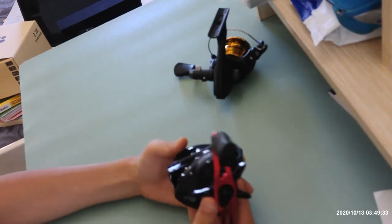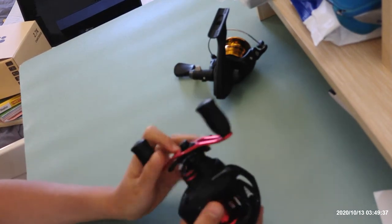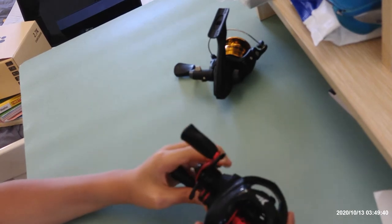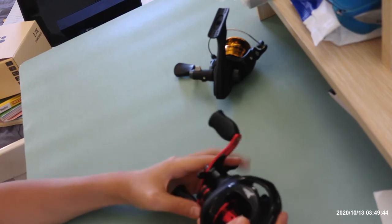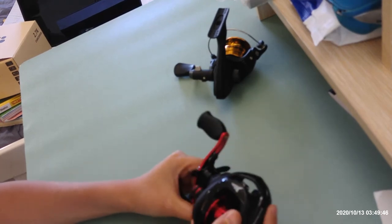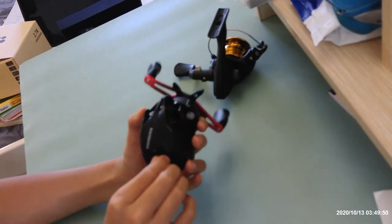The second difference is the drag is shaped like a star and it's on the side. You can change the drag. It also has a magnetic brake which